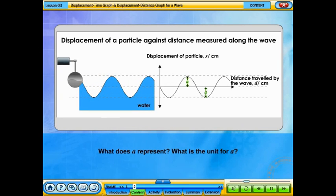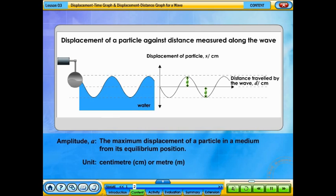What does A represent? What is the unit for A? A represents the amplitude of a wave, which is the maximum displacement of a particle in a medium from its equilibrium position. Amplitude is measured in centimeters or meters.